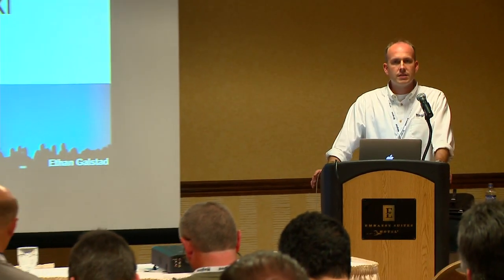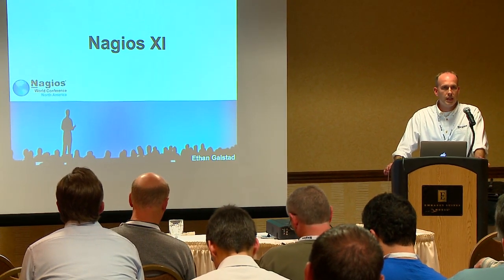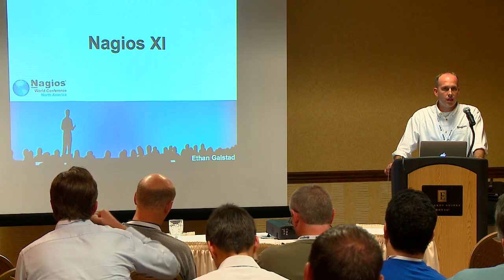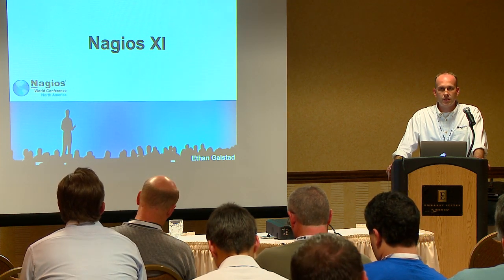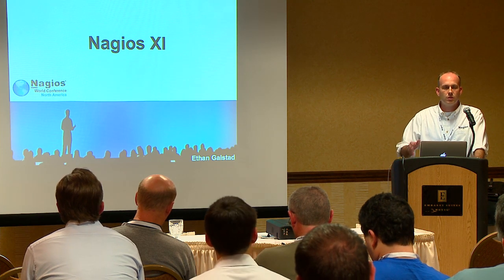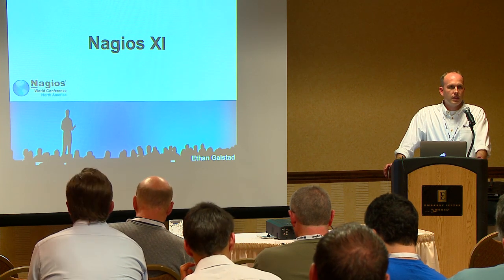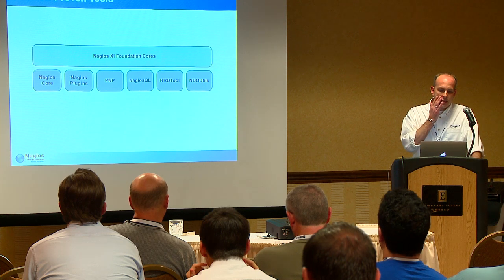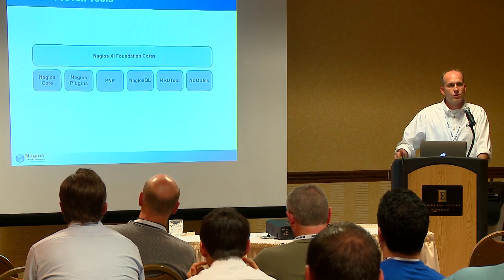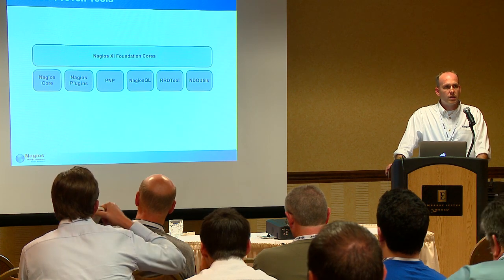Nagios XI is our commercial product. It's built on top of Nagios Core and other open source components — like PNP, which is the graphing engine we use. We use Nagios QL as the advanced configuration back end, though we've actually modified it. We're moving towards Nagios CCM, which is basically a rewrite of a lot of what's in Nagios QL. It's built on the best tools that were most widely used by the community.